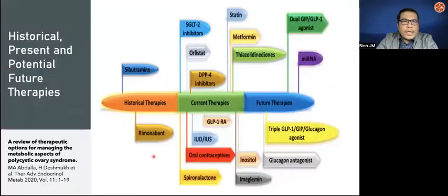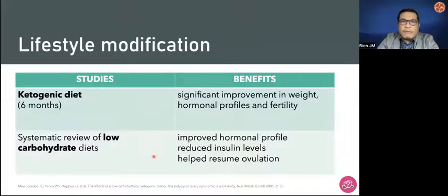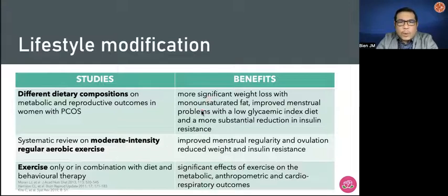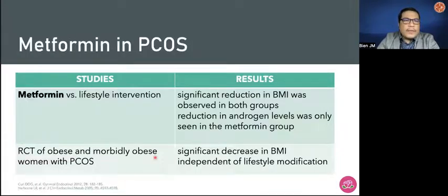Currently, these are the present and potential future therapies for patients with PCOS. Lifestyle modification includes ketogenic diet and low-carbohydrate diet, which could improve weight and hormonal profiles and fertility as well as reduce insulin levels that can help ovulation. There are also data on different dietary compositions, and systematic review on moderate intensity regular aerobic exercise showing significant effects on weight loss, improved menstrual irregularity and ovulation, and significant effects on metabolic, anthropometric, and cardiorespiratory outcomes. Data on metformin versus lifestyle show reduction in BMI as well as reduction in androgen levels in the metformin group.